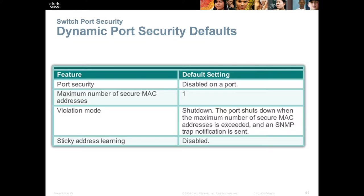To turn on port security, first know the defaults: port security is off by default; the maximum number of secure MAC addresses defaults to 1; the violation mode defaults to shutdown; an SNMP trap notification is sent when the maximum is exceeded; and sticky address learning is disabled by default. Knowing the defaults prevents unexpected behavior when you enable port security.